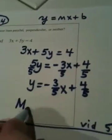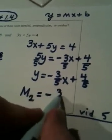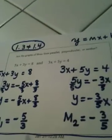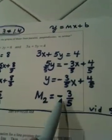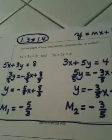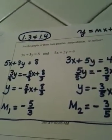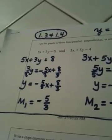So m sub 2, which is the slope of line 2, is negative 3 fifths. Now, negative 5 thirds is the slope of line 1, and negative 3 fifths is the slope of line 2. Again, where I want you to be careful: I have a lot of my own students tell me these are perpendicular. No, they're not.